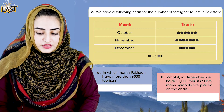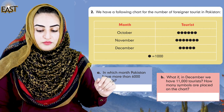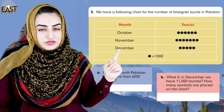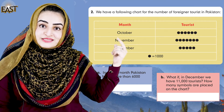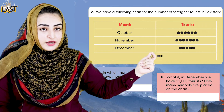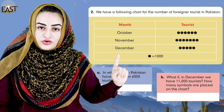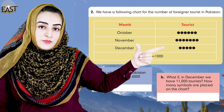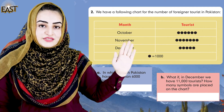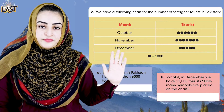Now look at the next page. We have a chart showing the number of foreign tourists in Pakistan. In October, how many tourists do we have? 6,000. How do we know? It is written in the key below: 1 dot equals 1,000. So 6 dots means 6,000, 7 dots means 7,000. October has 6,000, November has 7,000, and December has 5,000.